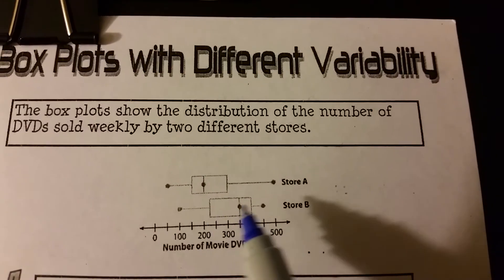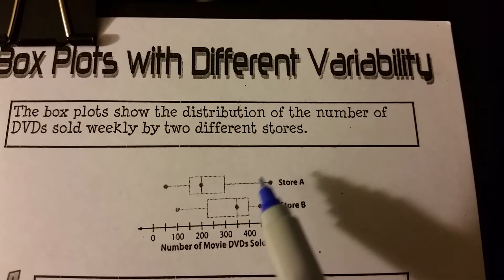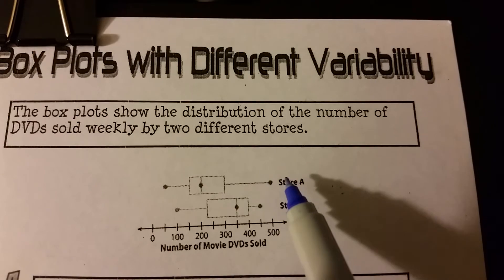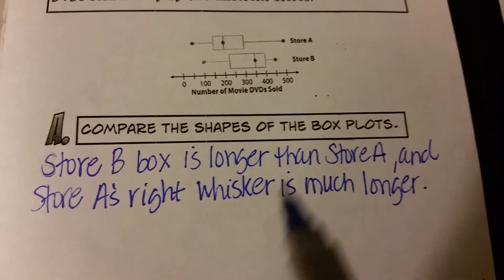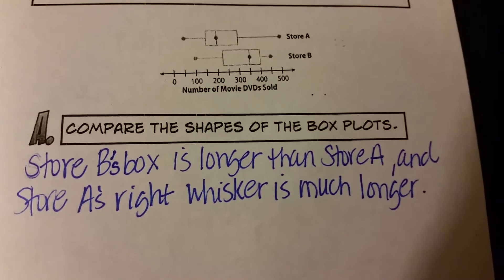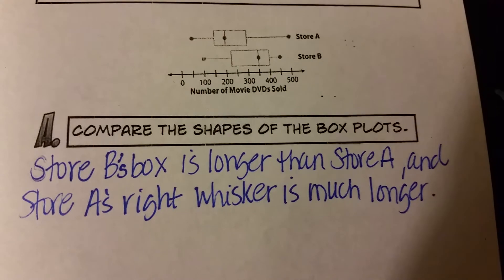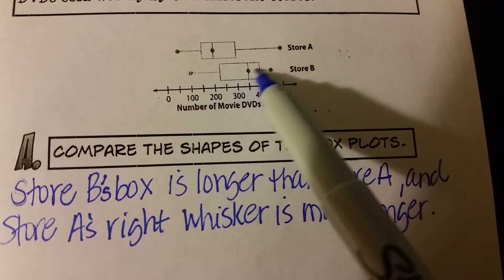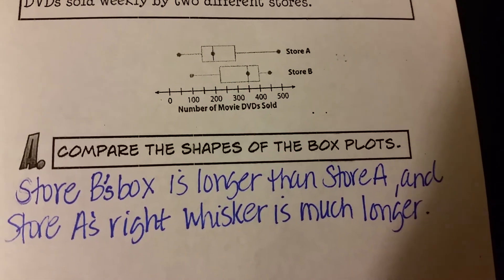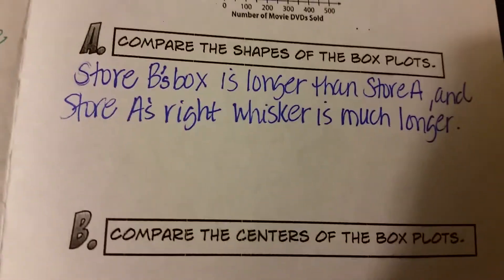Looking at the shapes: Store B's box is a little bit longer than Store A's. Store A's right whisker is much longer than Store B's. Most of Store B's data is shifted and spread out a little bit longer. So Store B's box is longer than Store A's, and Store A's right whisker is much longer.